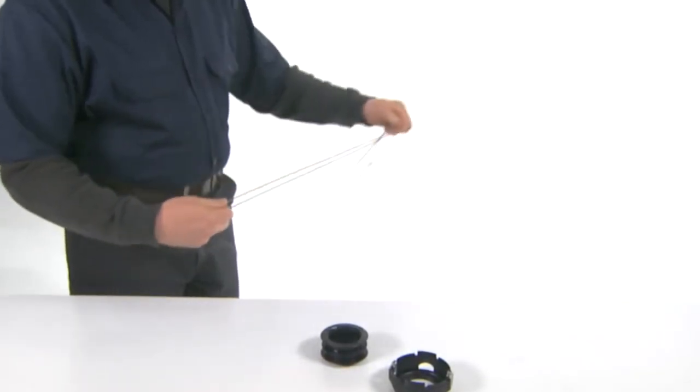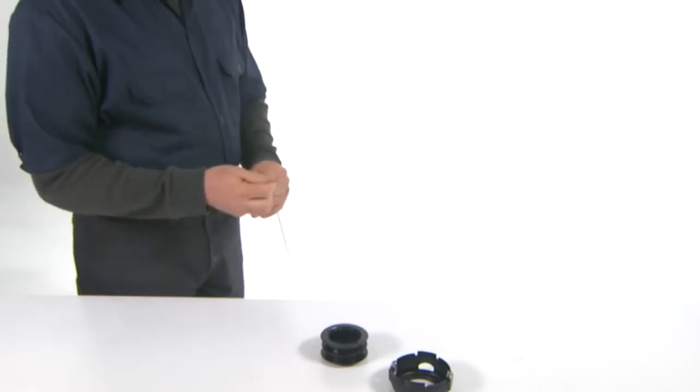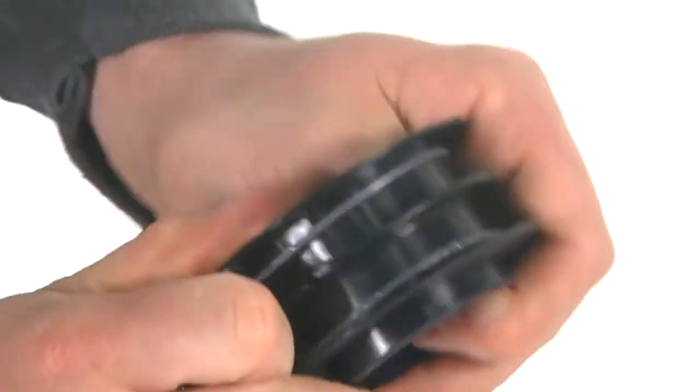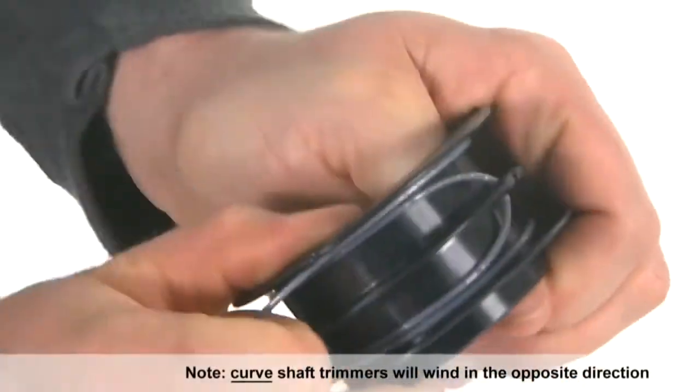Hold the loose ends of the line together with one hand and with the other hand find the middle. Hold the spool in your left hand and take this middle loop and hook it over the slot in the spool and wind half over each side.